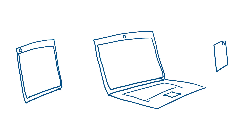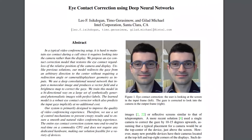Our eye contact corrector runs in real-time and supports a wide variety of video conferencing capable devices, having different display sizes and camera placements. Our model preserves details such as glasses and eyelashes without hallucinating details that do not exist in the input. We built this system primarily to improve the quality of video conferencing experience, however it can be used in other cases too. For example, personal broadcasters can read a script from the display of their device while maintaining eye contact with their viewers. Take a look at our paper to learn more about how our system works.